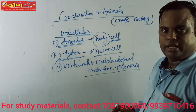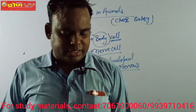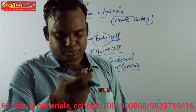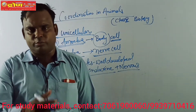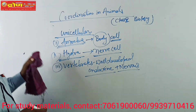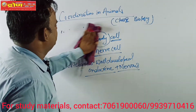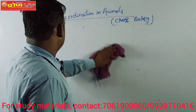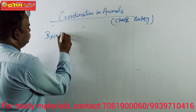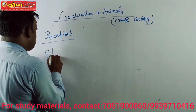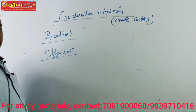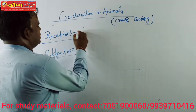We will talk about receptors and effectors. In the environment, information is available which we receive through receptors. The stimulus-detecting organs are called receptors, and the response-carrying organs are called effectors. We will talk about our senses: the five sense organs.